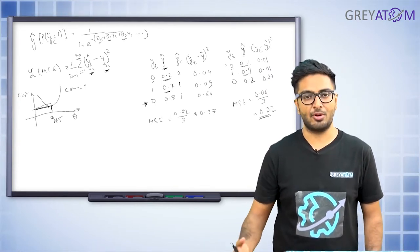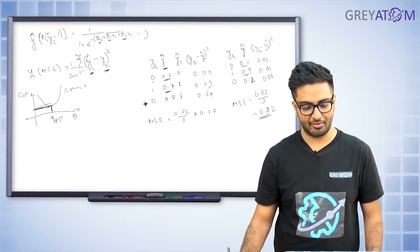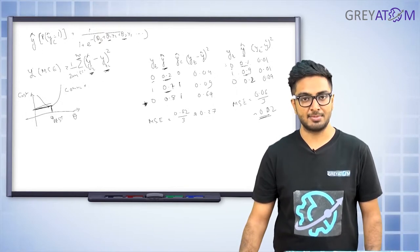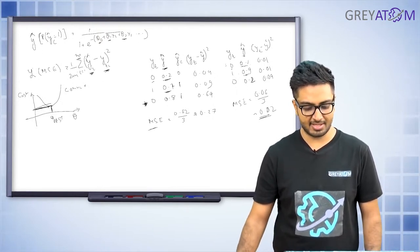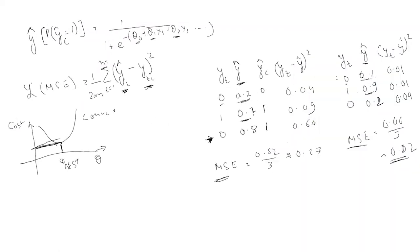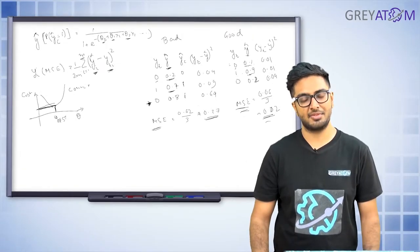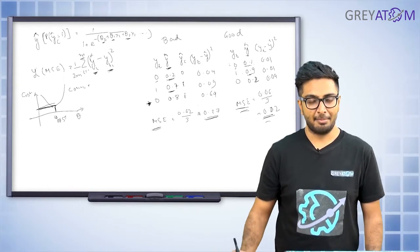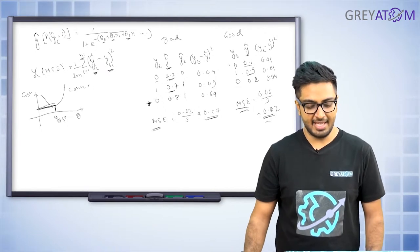If you want your model to predict not only correctly but also with higher confidence — making it more robust — you can see that MSE loss does seem to be a valid measure here. The MSE is higher for the bad model (0.27) and lower for the good model (0.02). This shows MSE loss is actually a reasonable measure even for logistic regression.